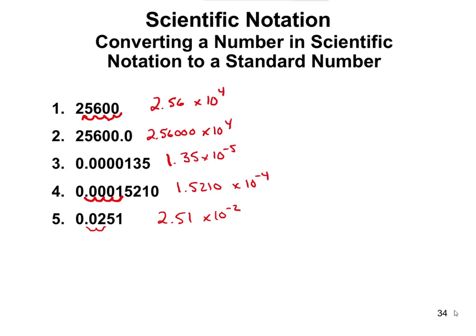If we wanted to do examples going from scientific notation to a standard number, you're basically doing the same thing in reverse. If we had 3.17 times 10 to the 5, you write 3.17 and then move the decimal point to the right to make this a bigger number — 1, 2, 3, 4, 5 places — and fill in zeros where needed. This number would be 317,000. We don't write the decimal point there because that would indicate significant figures; we only have three significant figures here.